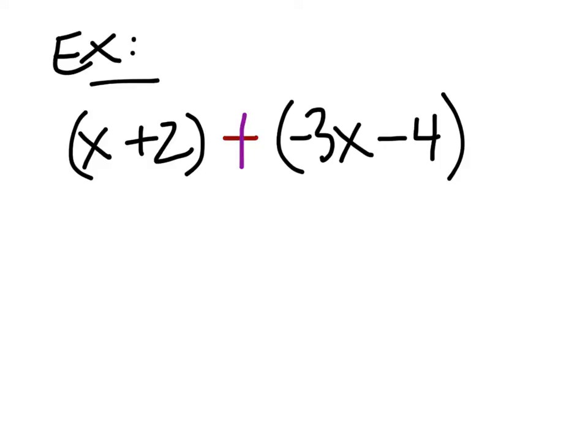Now when you do this, it does affect other things inside the parentheses to the right. The term takes the operation to its left. So what we're going to do is change this 3x — see how it's negative 3x? It's now positive. See how it's minus? Now it's plus.